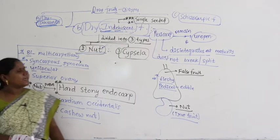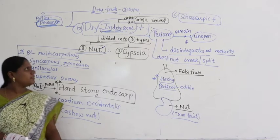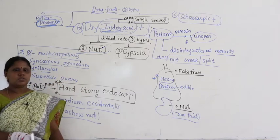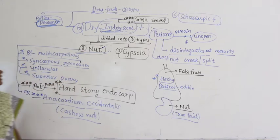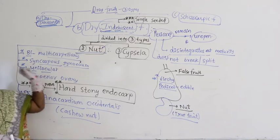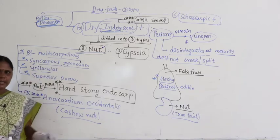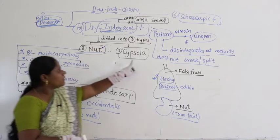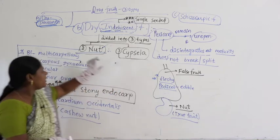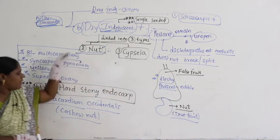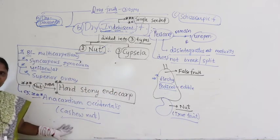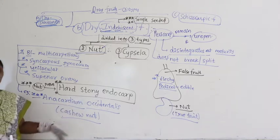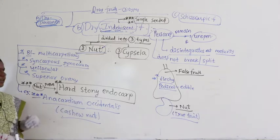So hello students, let us continue with dry indehiscent fruits. In that, what are the three categories? One is karyopsis, which we completed. Second one is nut. Third one is cypsela. Let us quickly revise about nut because nut is very important and I would like to give one question. So let us revise the nut part again.